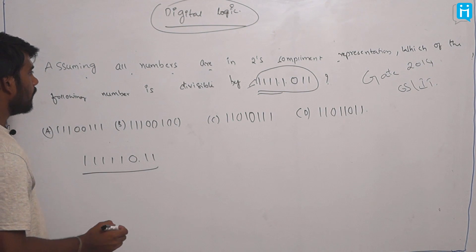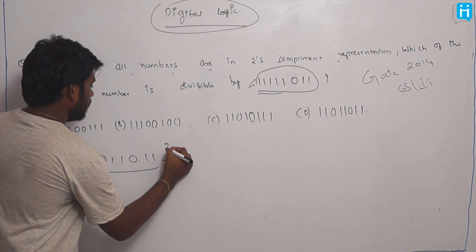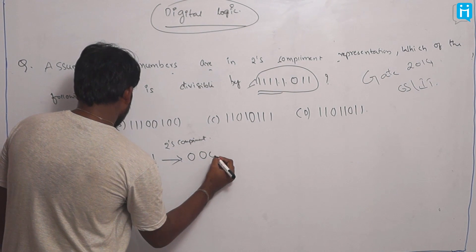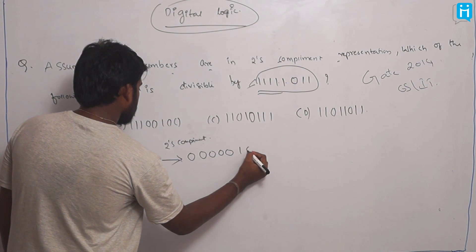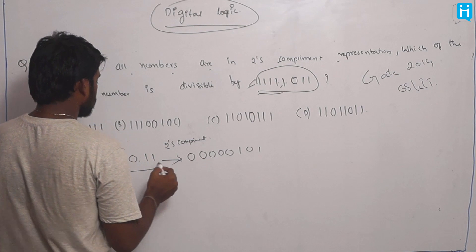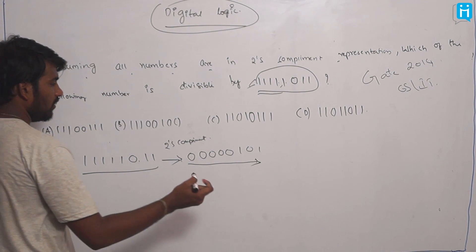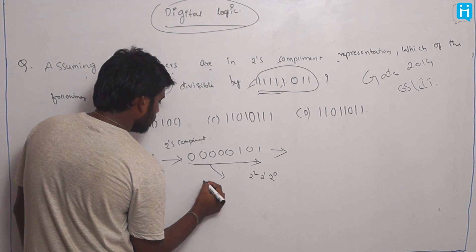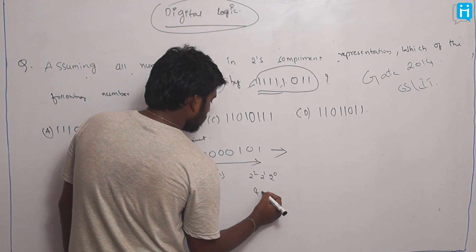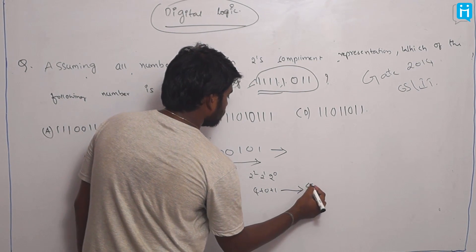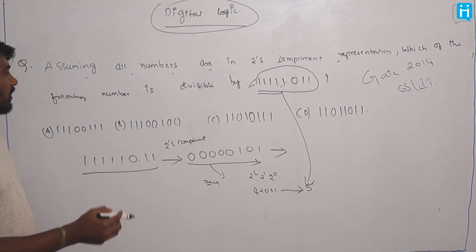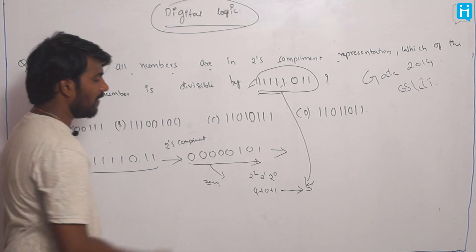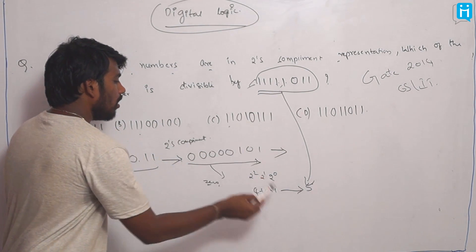So this is the number given. When converting this number from 2's complement to decimal: the bit positions give 2 power 2 plus 2 power 0, which is 4 plus 1 equals 5. So this number is 5. The question is: assuming all numbers are in 2's complement, which of the following numbers is divisible by 5?